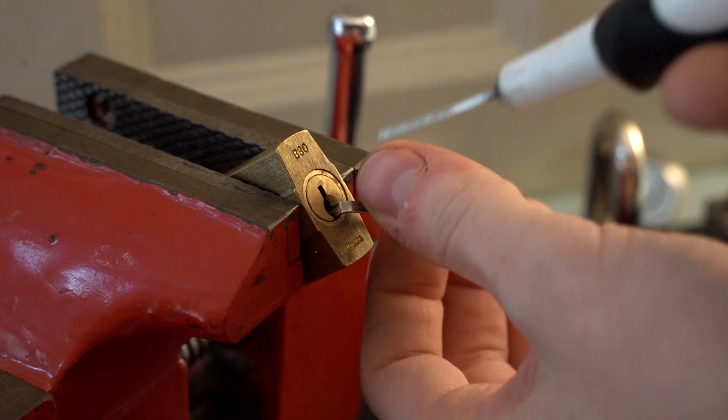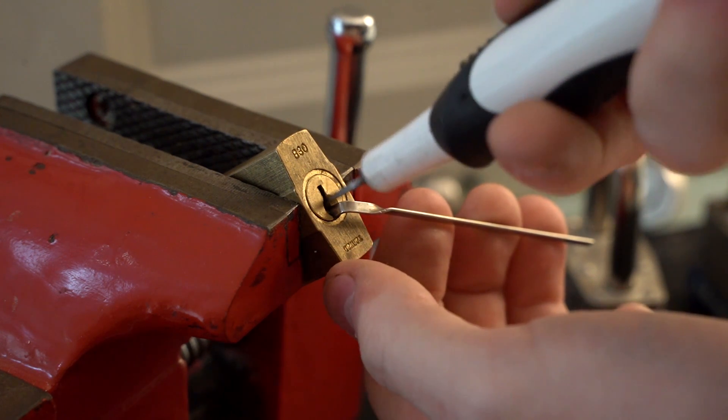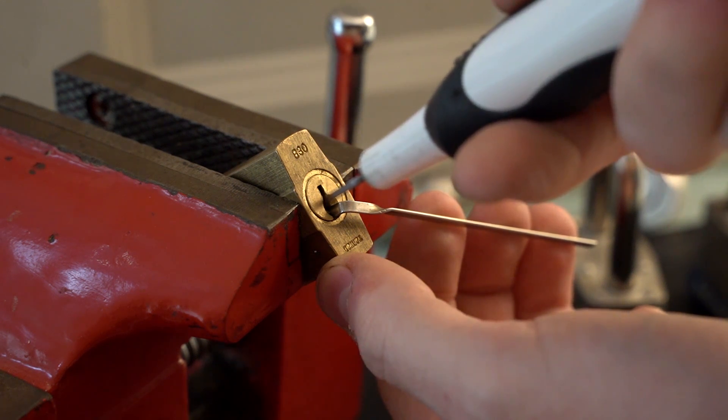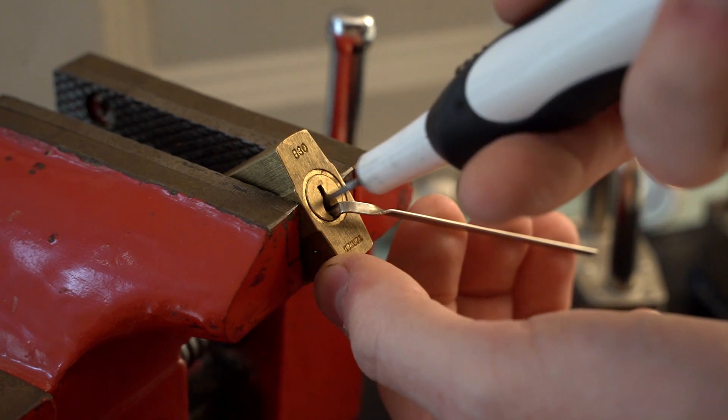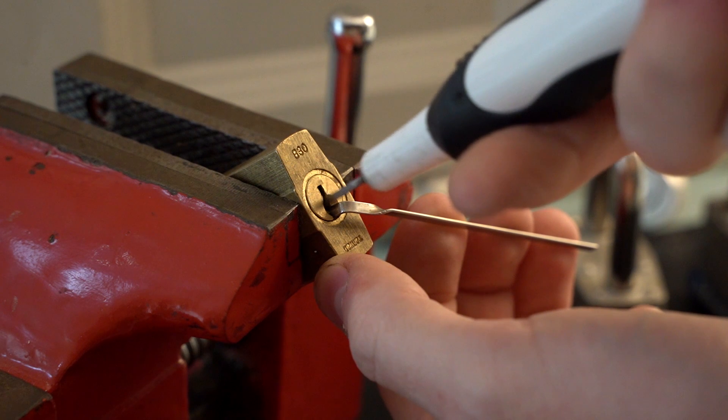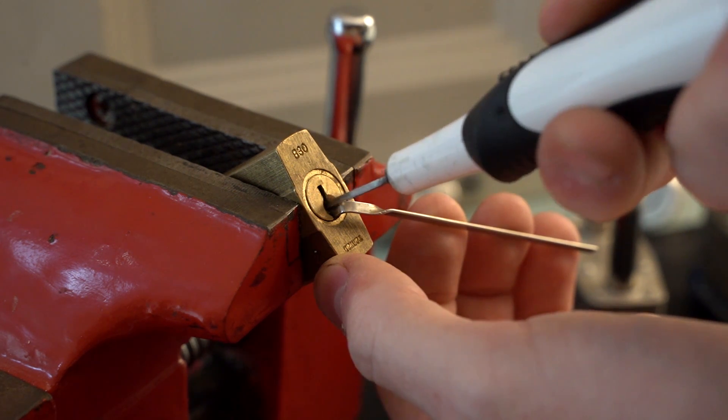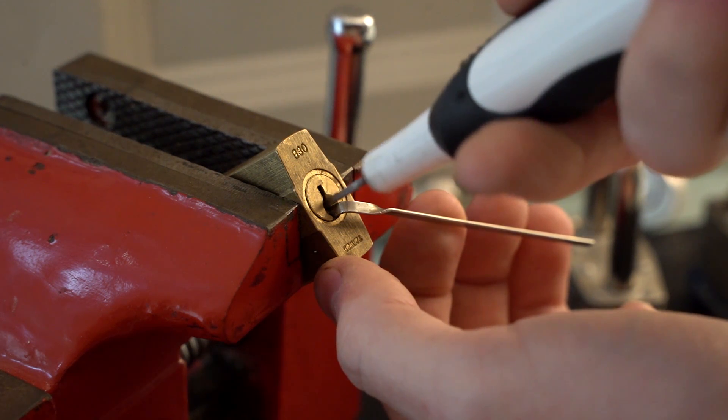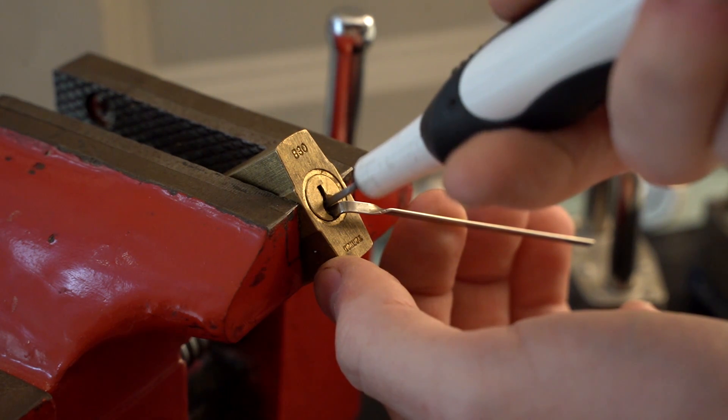Successfully using an electric lock pick is mostly about understanding tension and being able to read the feedback from the lock. Tiny changes in the lock are transmitted along the tension tool and if you are applying too much tension the pins will struggle to move. You may be able to feel this feedback in the tension tool as well as the action in the pick tip.